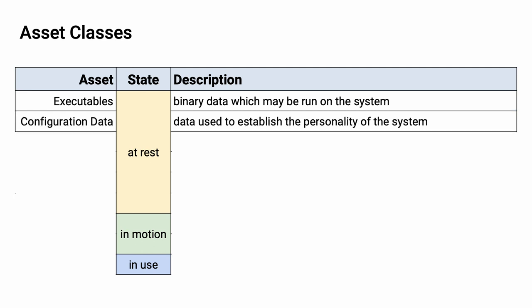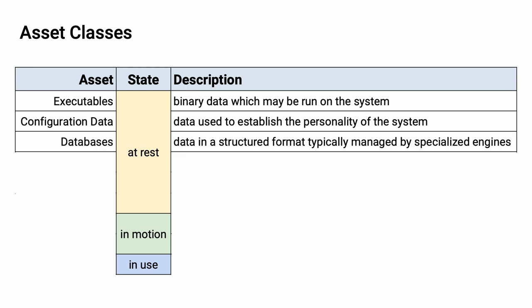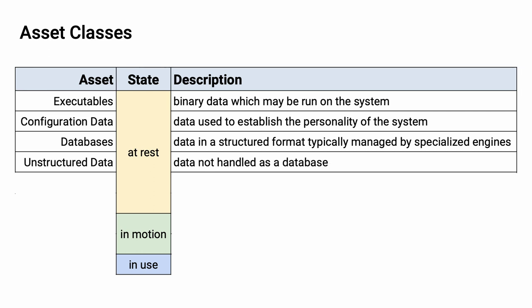Next is configuration data — the data used to establish the personality of a system. One can consider this metadata that gives personality to the executables. The next is structured data, or databases. This is data in a structured format, typically managed by specialized database engines. Next, we have unstructured data — any data store not handled as a database, so binary data files fall into this class, as do plain text files.